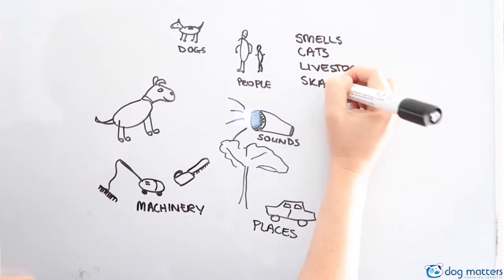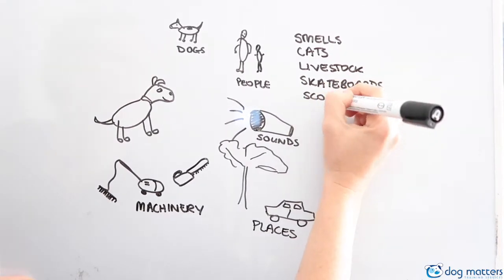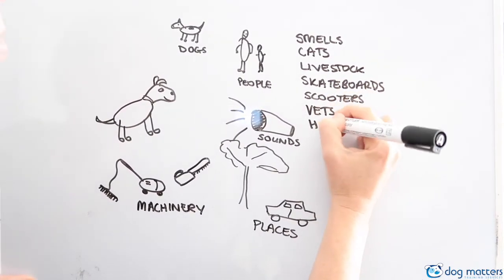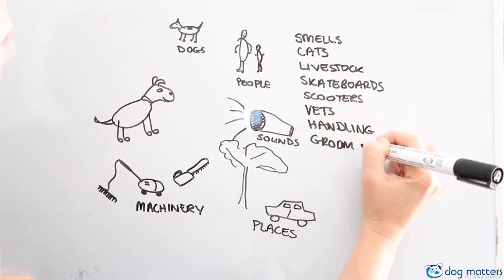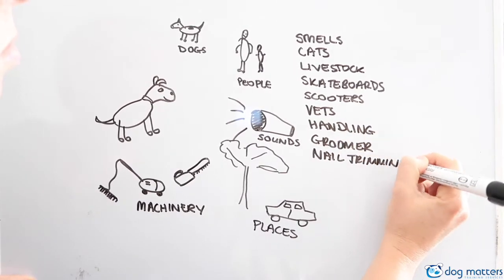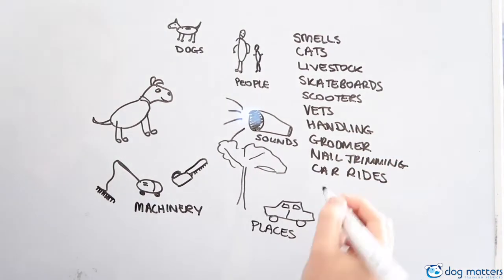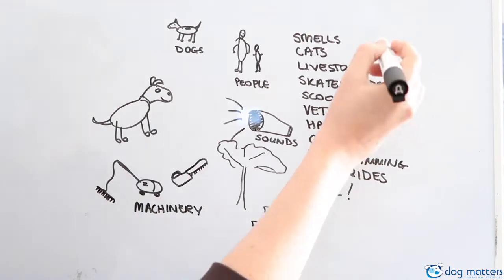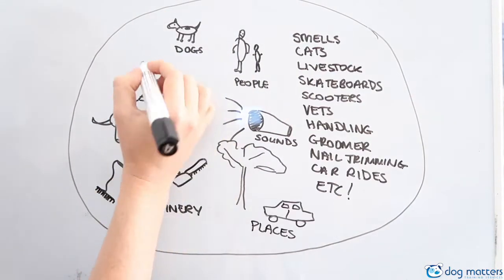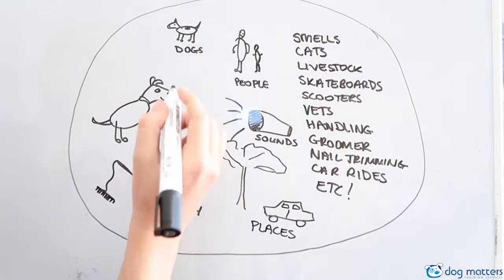Different smells, cats, livestock, skateboards, scooters, the vets, handling, grooming, nail trimming, car rides, and a great many other things. All of this encompasses correct socialization.